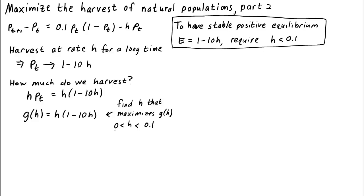When H is 0, G of H is 0. That makes sense. We don't get any harvest when we don't harvest anything. And when H is 0.1, the sustainable harvest is also 0. G of 0.1 is 0. And this occurs because then the population has died out.